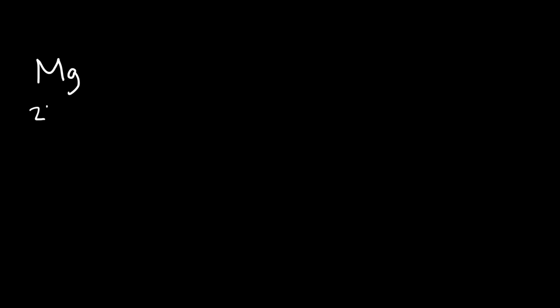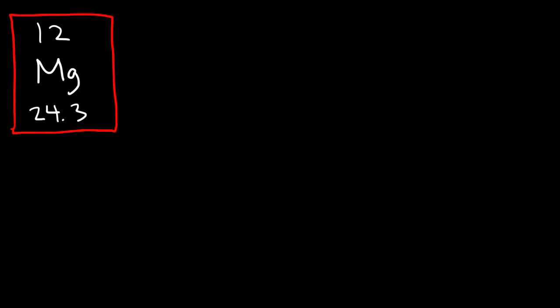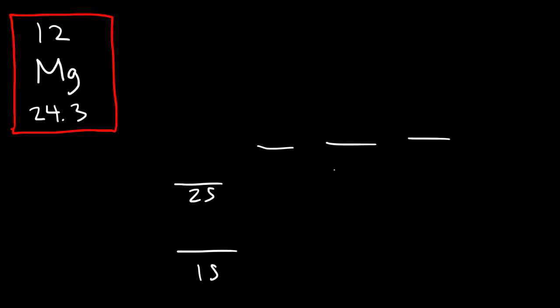I want to make one small correction. I mentioned that you should write the electron configuration before filling the orbital diagram, but it turns out you really don't need to. I'm going to use magnesium as an example. It has an average atomic mass of about 24.3 and an atomic number of 12. An atom of magnesium has 12 protons and 12 electrons, so all you need to do is fill the orbitals until you reach a total of 12 electrons.